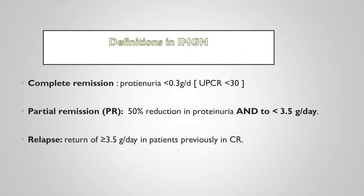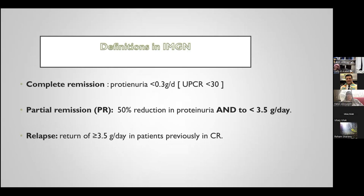Our treatment targets: complete remission is proteinuria less than 0.3 grams per day — a urinary PCR less than 30. Partial remission is a 50% reduction in proteinuria or less than 3.5 grams per day. Relapse is defined as returning to more than 3.5 grams per day. There is also a non-remission group who do not respond to any treatment.